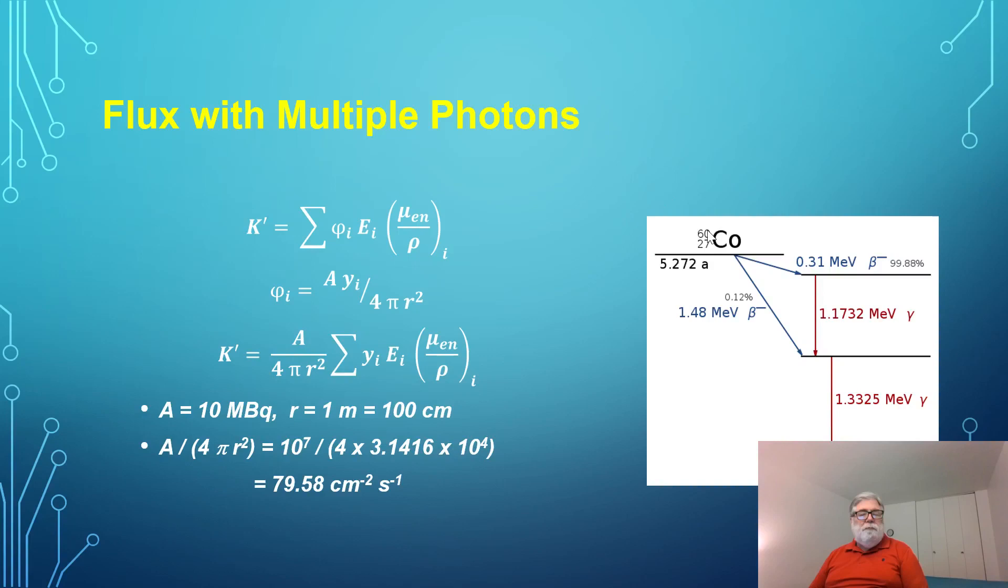Here's an example: Cobalt-60. In each decay, this nuclide gives off two different gamma rays. It also gives beta particles, but we're interested now in calculating the gamma ray kerma. So it gives off two different gamma rays, and we have to look at the total activity here, how many transformations per second, and then how frequently each different gamma ray is emitted.